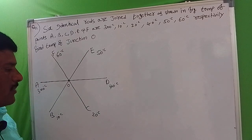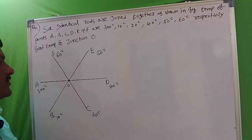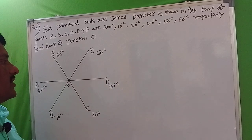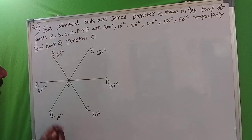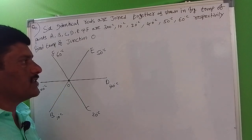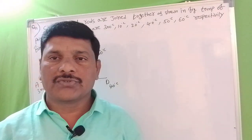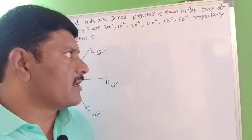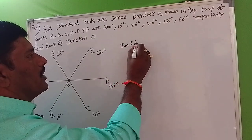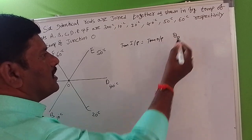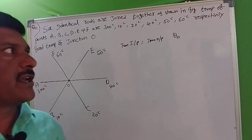So we have 6 rods, all at given temperatures as stated in the problem. To find the temperature at the center point O, let us consider the temperature at junction O is θ₀. The key principle is that heat input equals heat output.